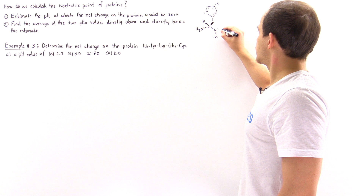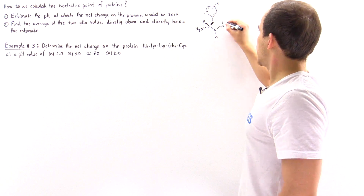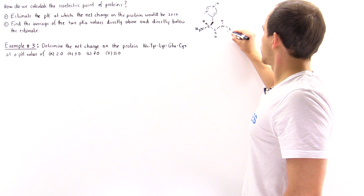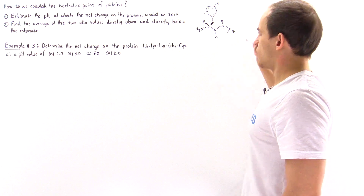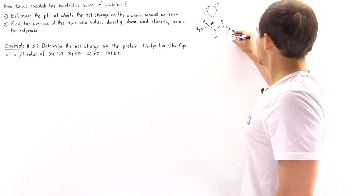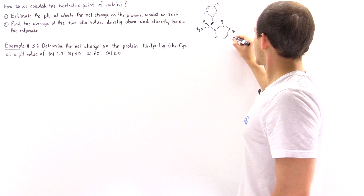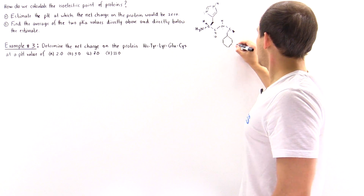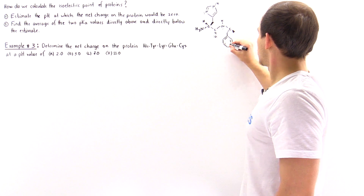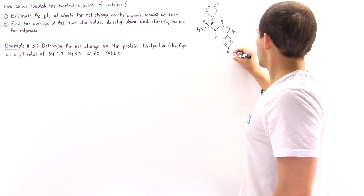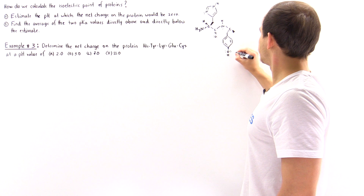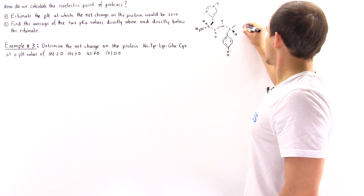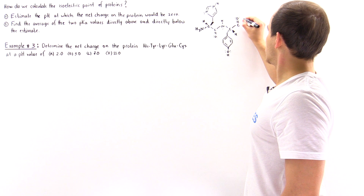Now let's move on to tyrosine. The side chain group for tyrosine is a phenol group — we have our benzene ring, then we have an OH group. And let's finish off amino acid number 2.